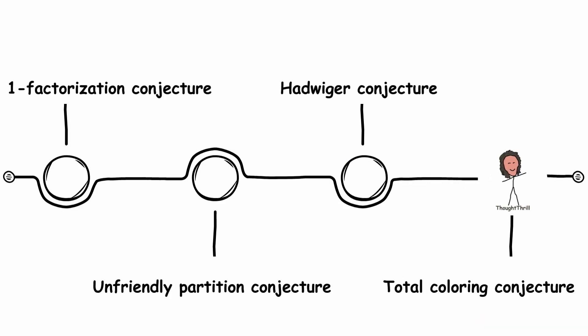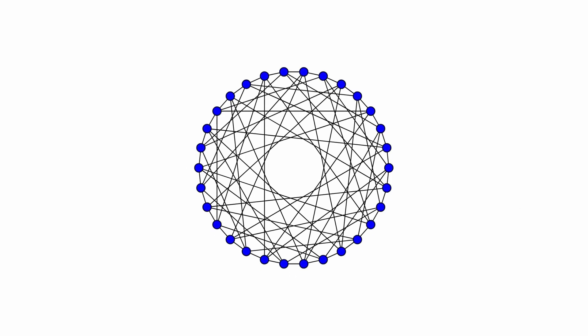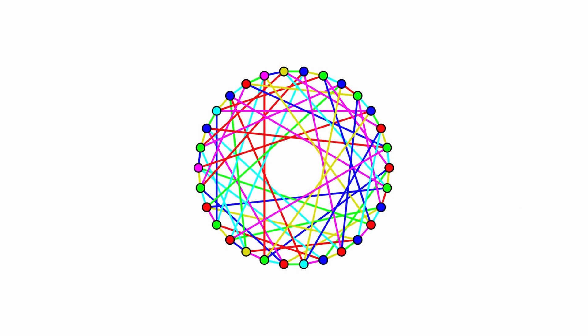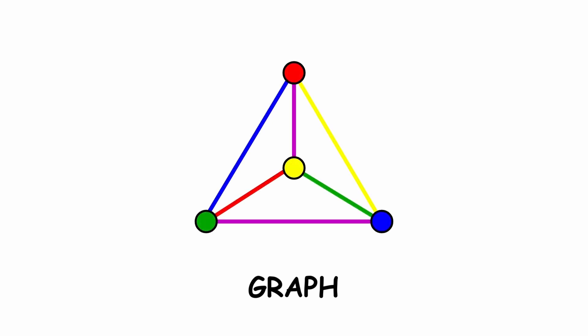Total coloring conjecture. We've already looked at coloring the vertices of a graph, but we can color the edges as well. Let's take a graph and color all of the vertices and edges.